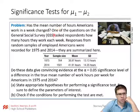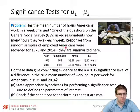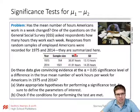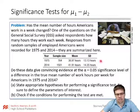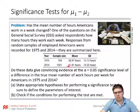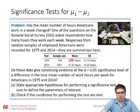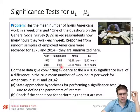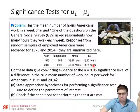Has the mean number of hours Americans work in a week changed? One of the questions on the General Social Survey asked respondents how many hours they work each week. Responses from random samples of employed Americans were recorded for 1975 and 2014. In 1975, with a sample of 764, the mean hours worked was 38.9 with a certain standard deviation. In 2014, with a larger sample size, the average was 41.91 hours with that standard deviation. So at least on this evidence, it seems like people are working longer.